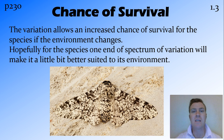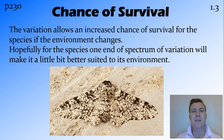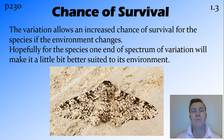A good example of this is the peppered moths example from England. When the white peppered moth lands on a tree, you can't see it, so therefore the predator birds can't eat it. When the Industrial Revolution happened, they were burning lots of coal, the trees turned black. The black version of the peppered moth then became the one that could blend in, while the white one was the one that was seen. So the white ones died, and the majority became the black variant.